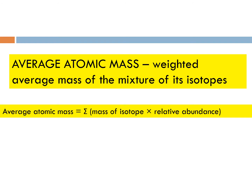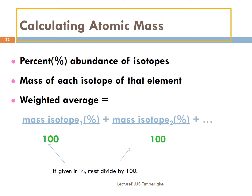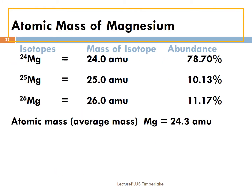Average atomic mass is the weighted average mass of the mixture of its isotopes. To find the average, you take the sum of each isotope times its abundance — make sure the abundance is in decimal form, not percent form. So it's the percent abundance of each isotope times the mass of each isotope, and that gives you the average weighted atomic mass. You have to divide by 100 or move the decimal over twice to convert from percentage to decimal form. Here we have magnesium-24, magnesium-25, and magnesium-26. The majority is 78% magnesium-24, so it's going to be closer to 24, and the average mass is 24.3, which makes sense.